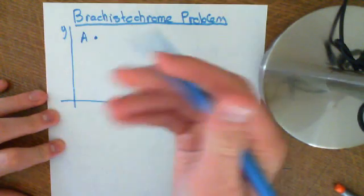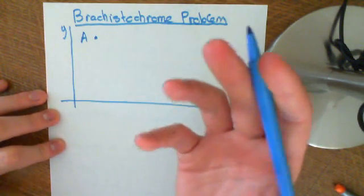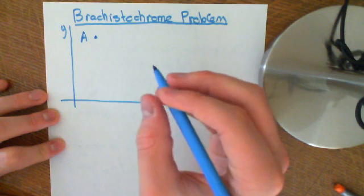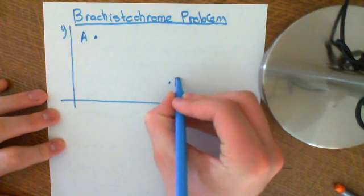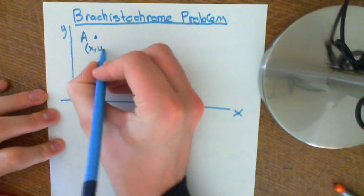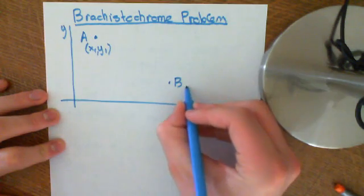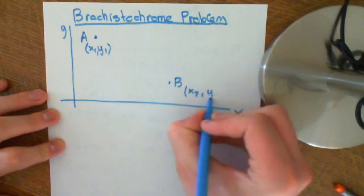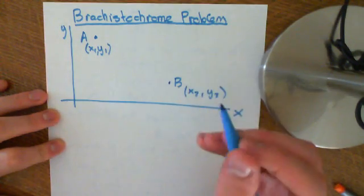And then we can do algebra on it, which is a very powerful tool. So you have two points, A and B. Let's say A has coordinates x1, y1, and B has coordinates x2, y2.